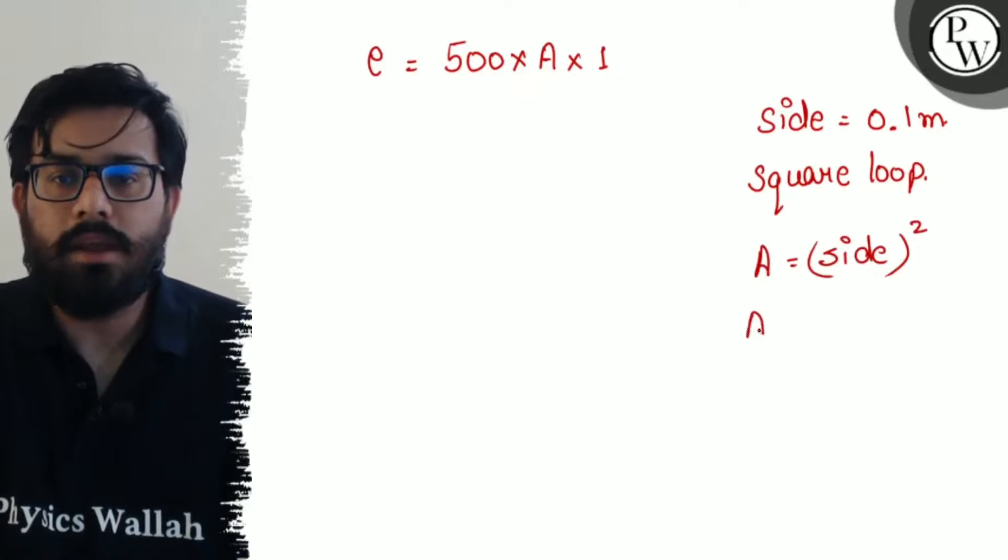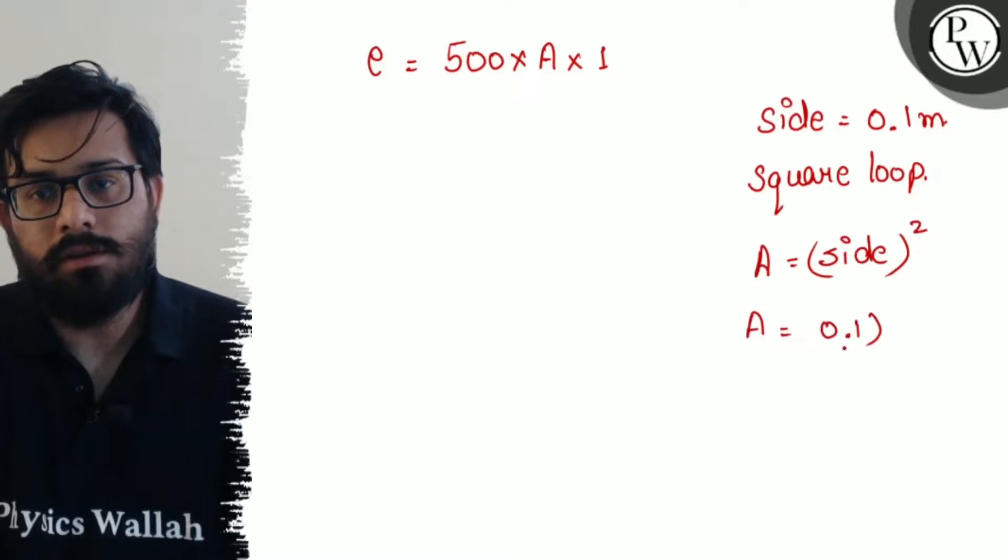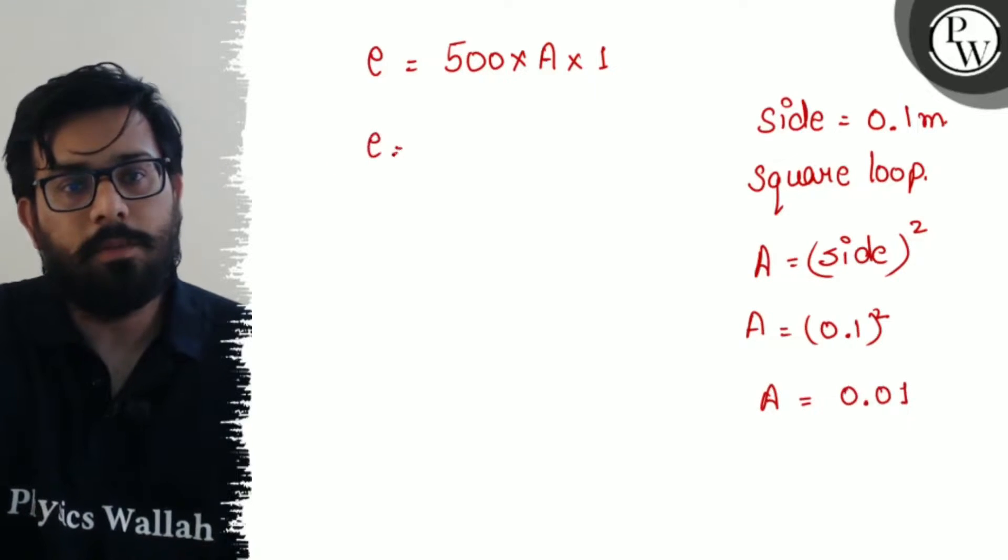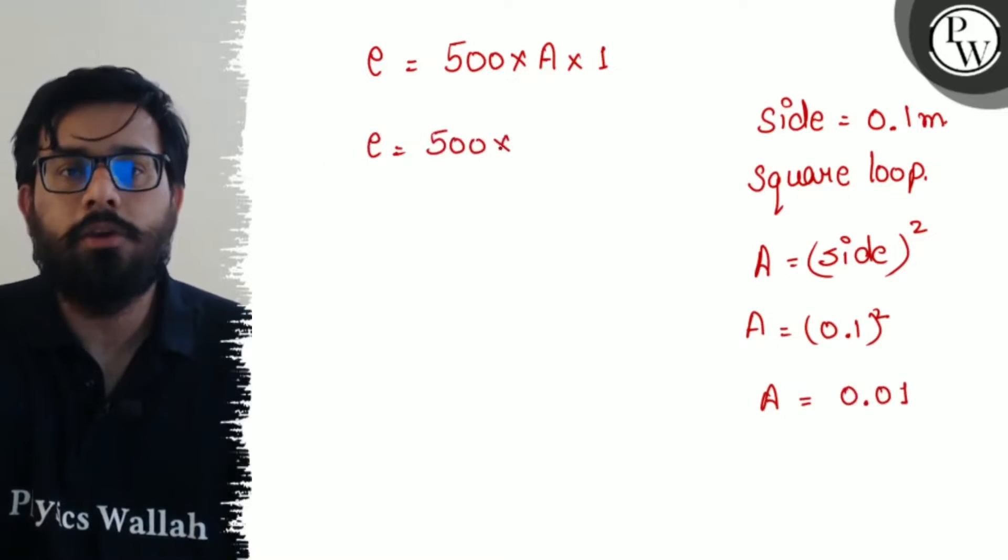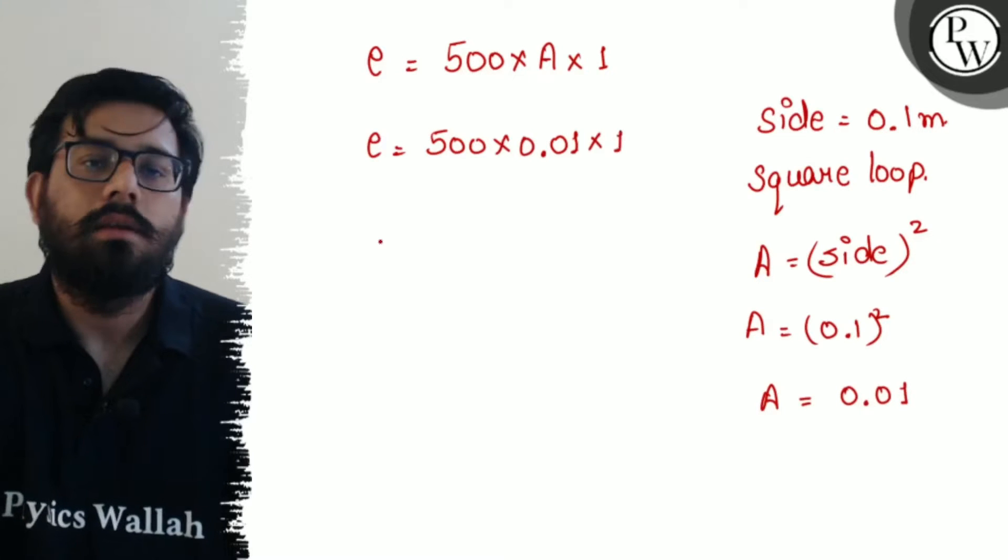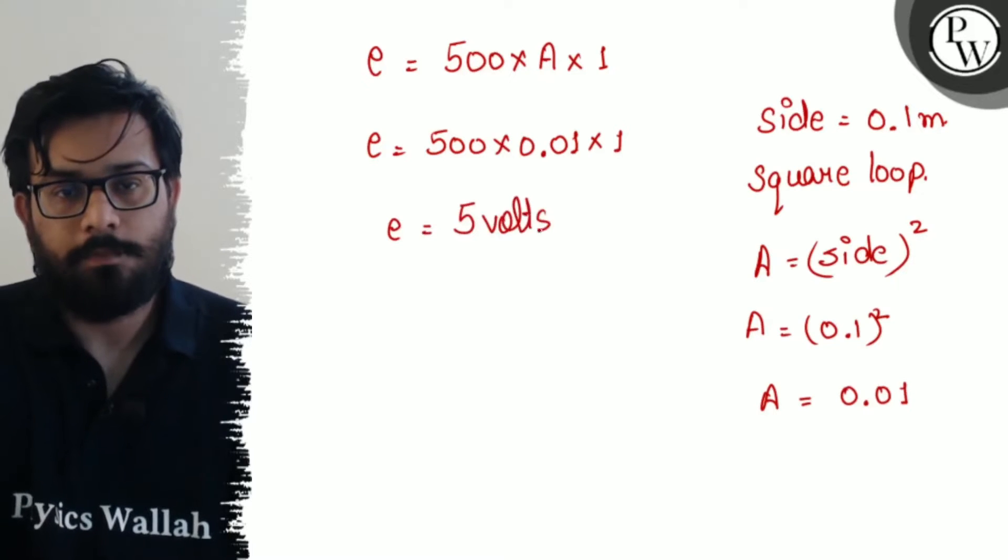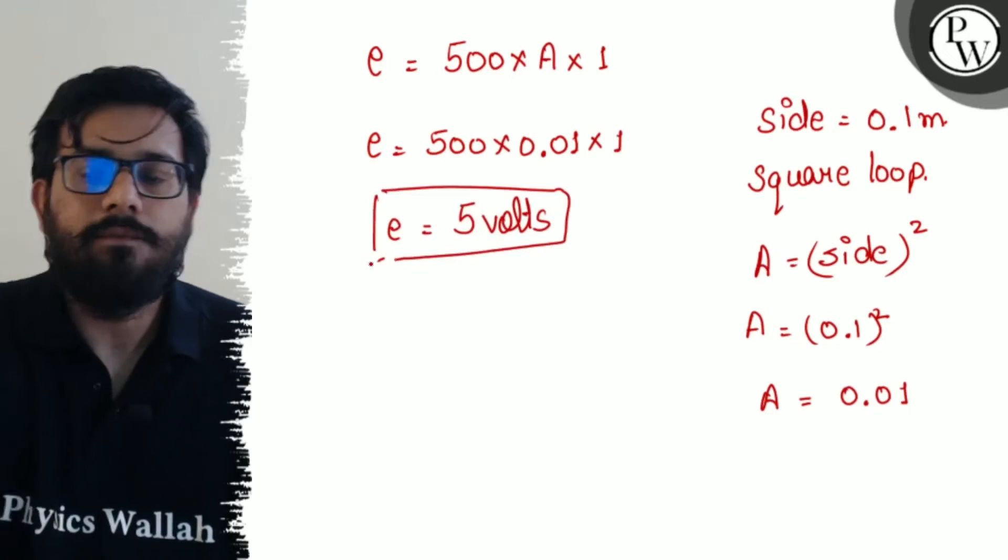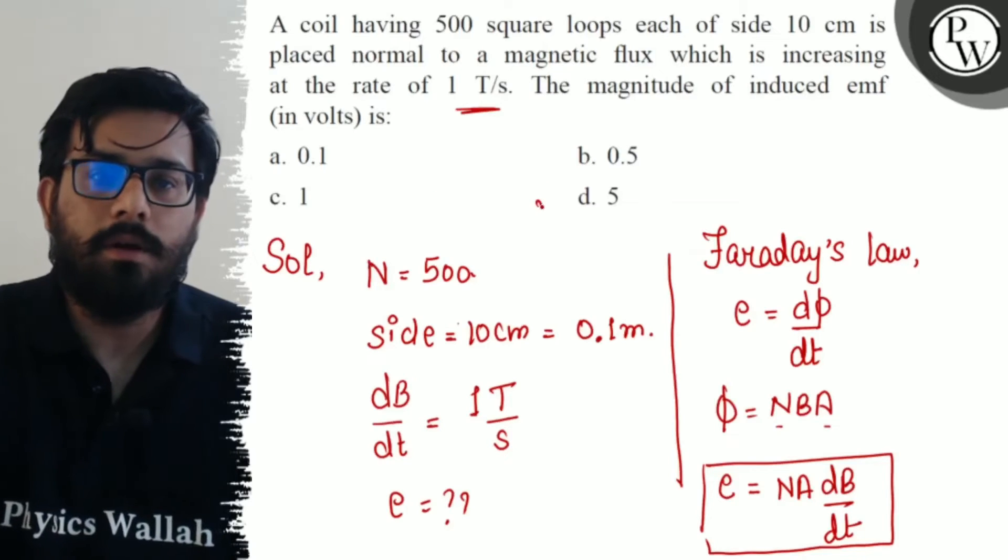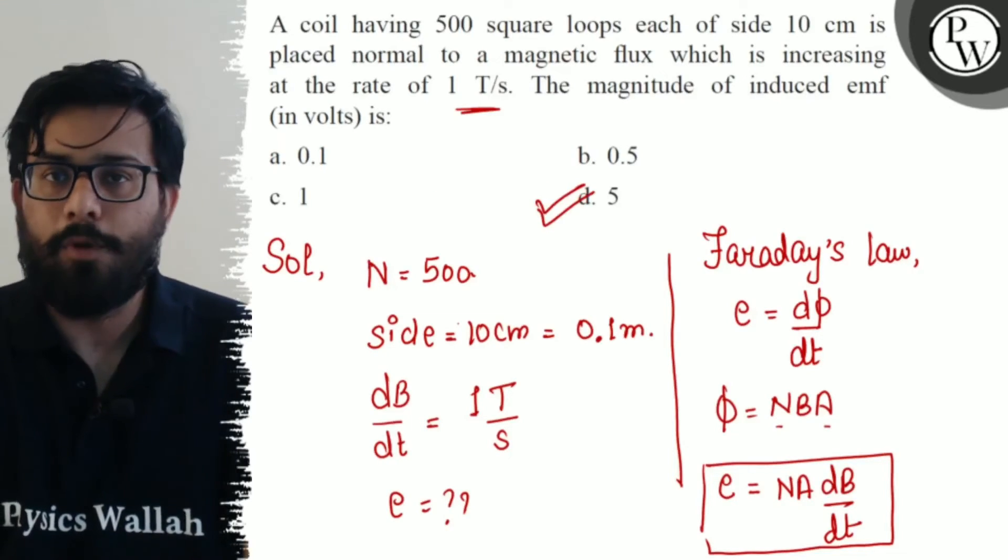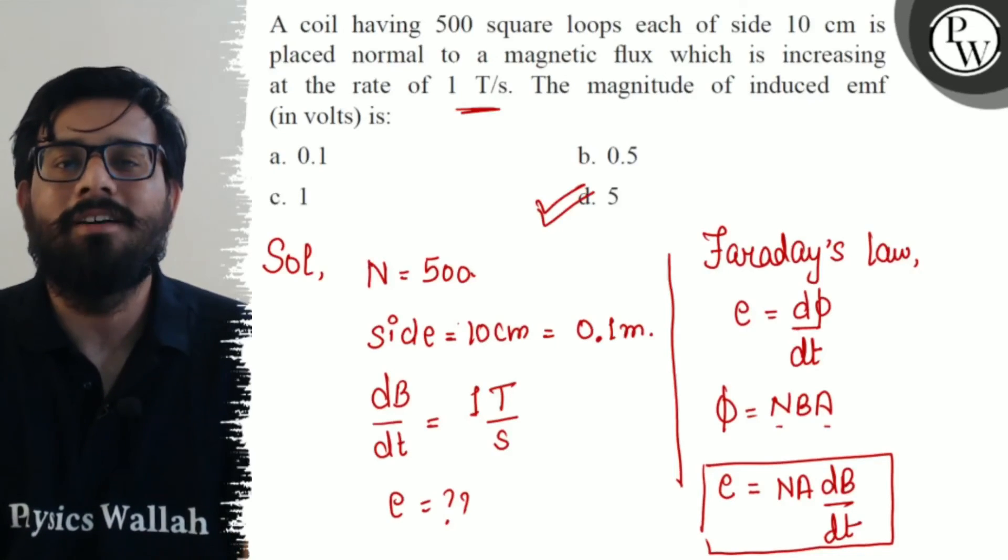So the area comes out to be 0.1 squared, which is 0.01 square meters. The induced EMF comes out to be 5 volts, which is your option D. So option D is the correct option. Hope you got the concept of this question. All the very best. I'll see you next time.